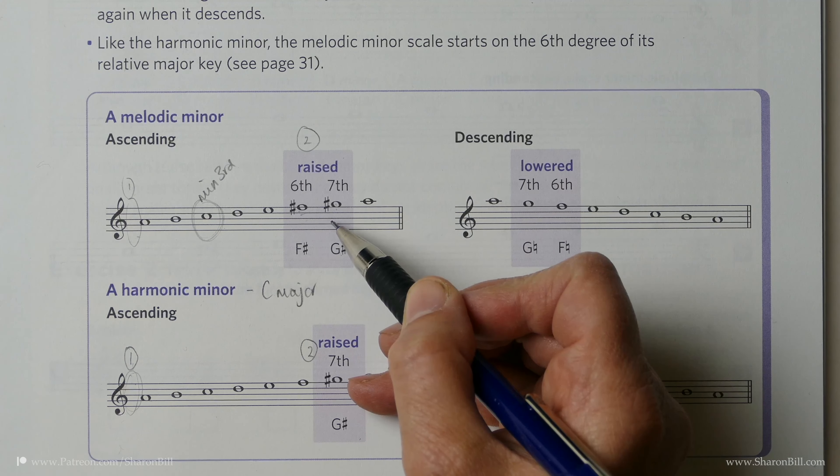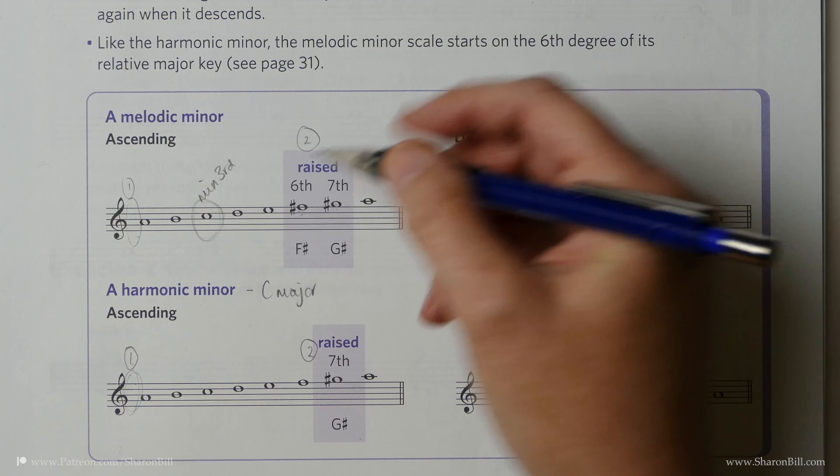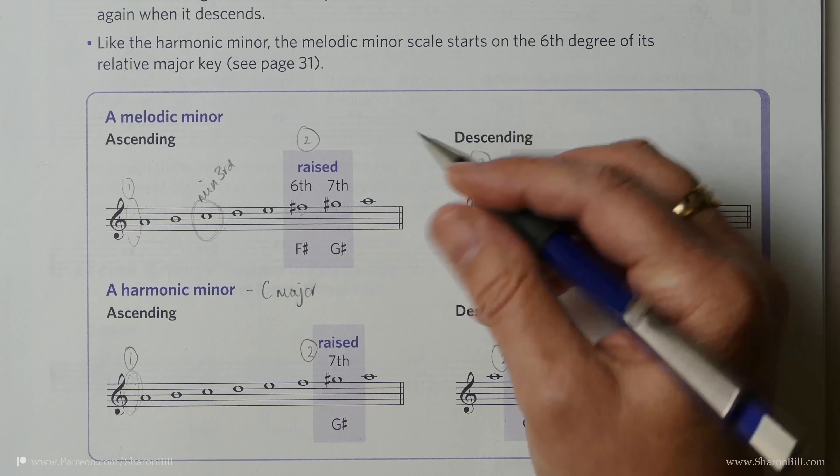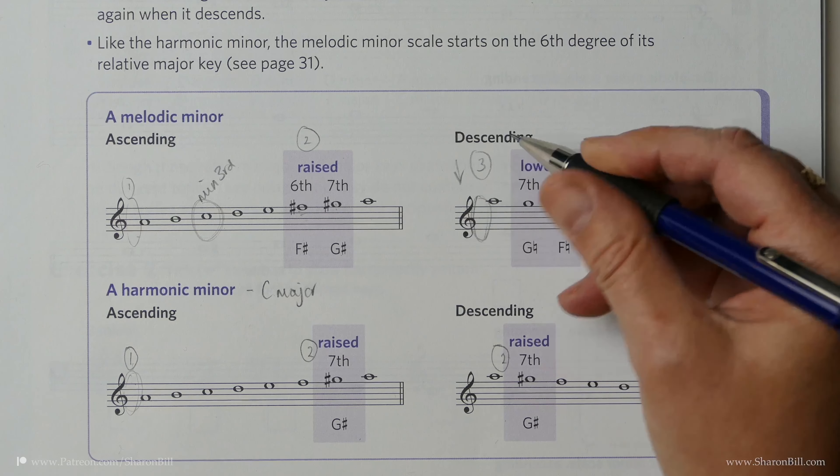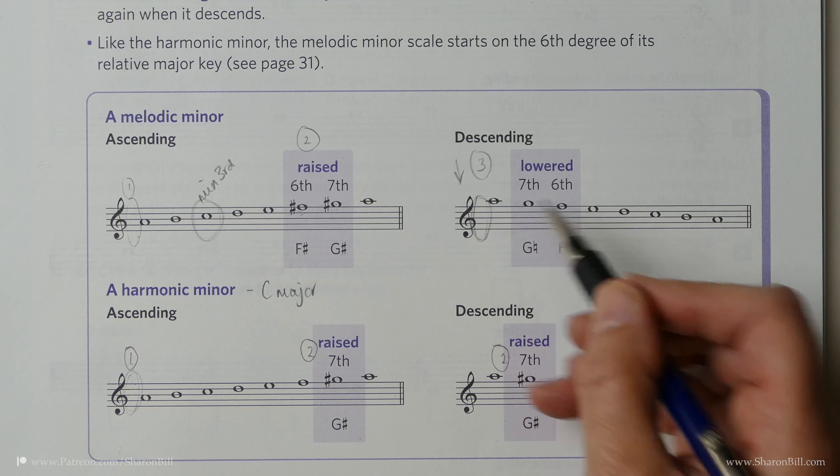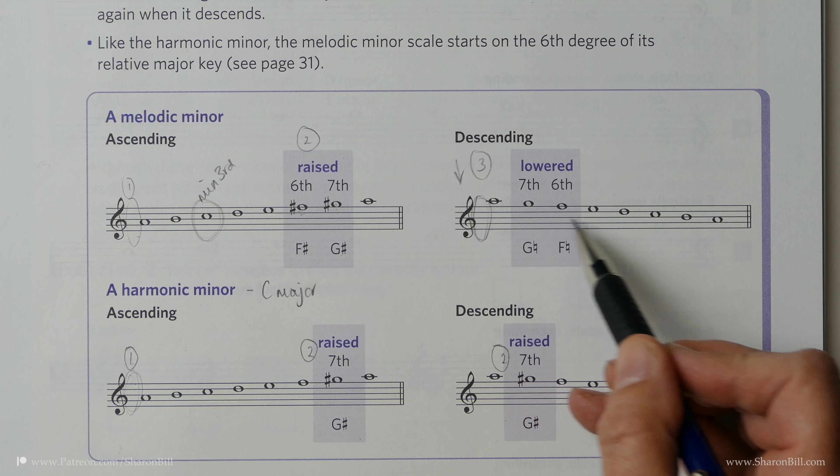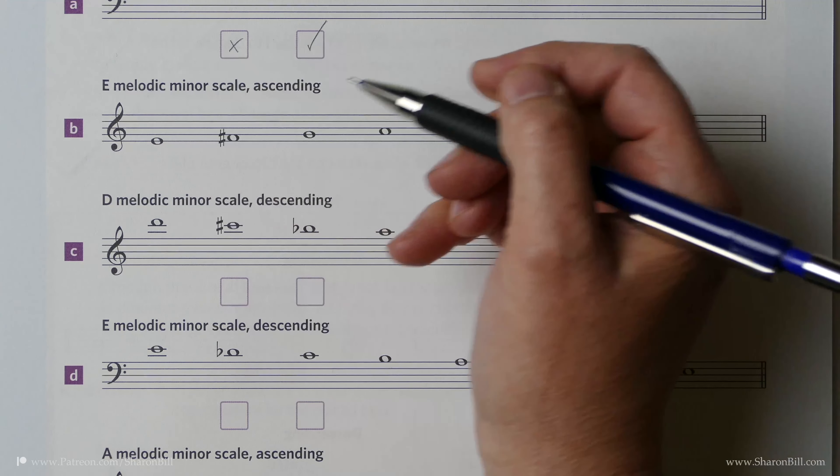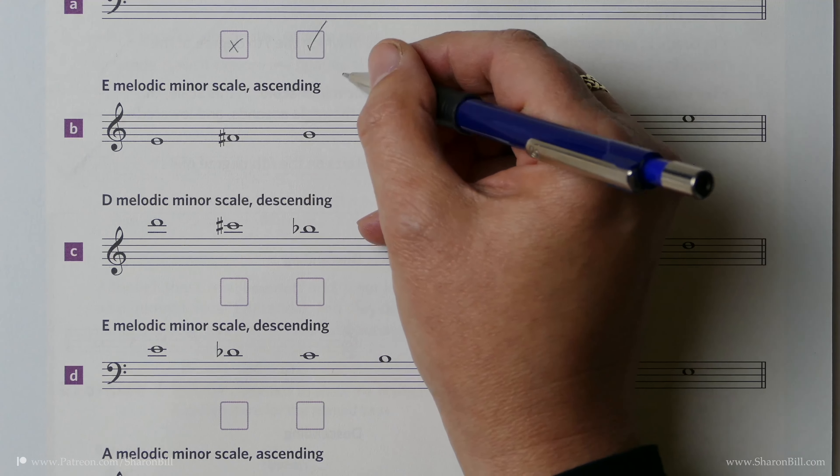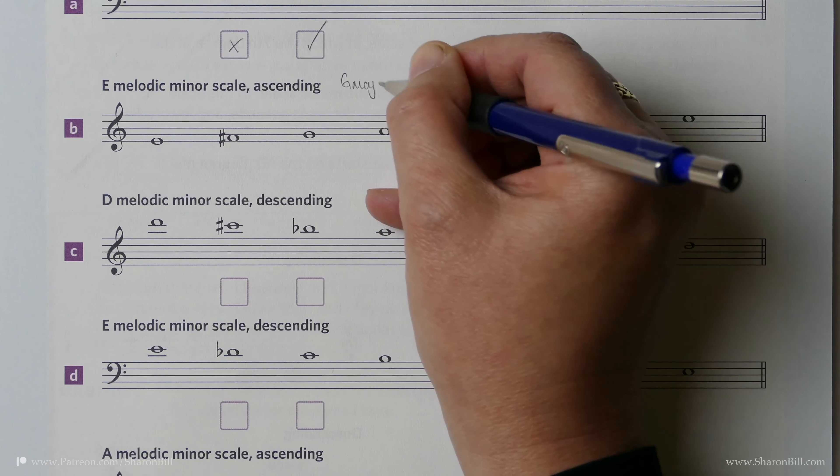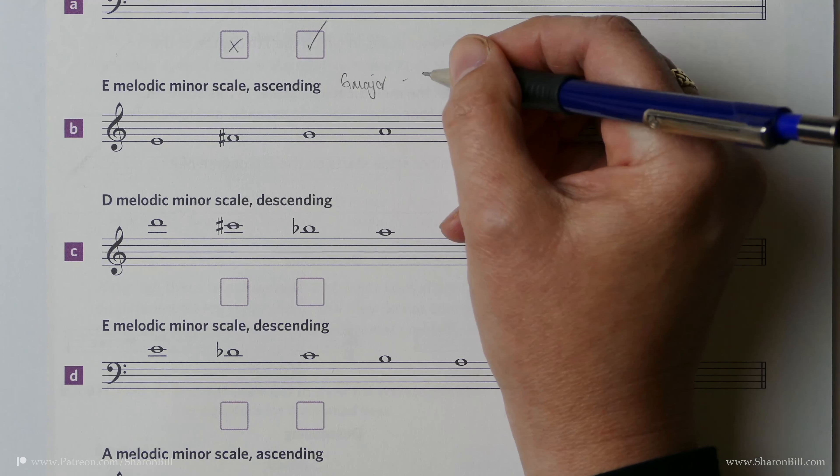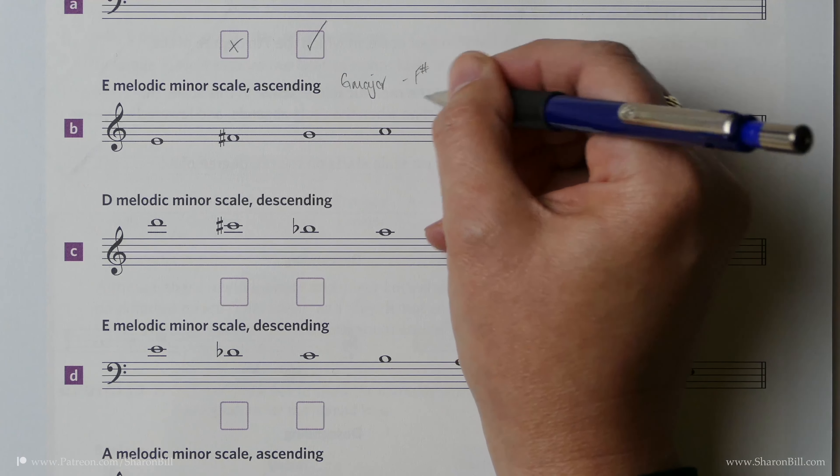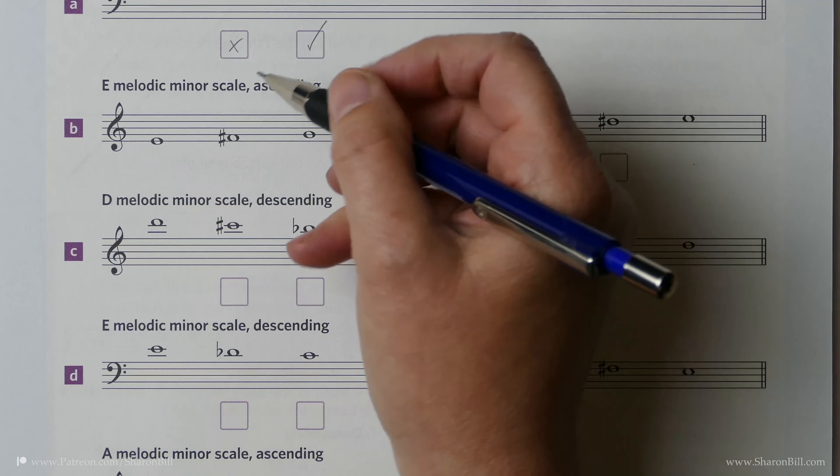And so we have the descending version, Step 3, where we come down in the key signature again, just the key signature. It's almost as if we're coming down really in what we're doing is coming down in the natural minor scale. And so we know that E minor is related to G major.